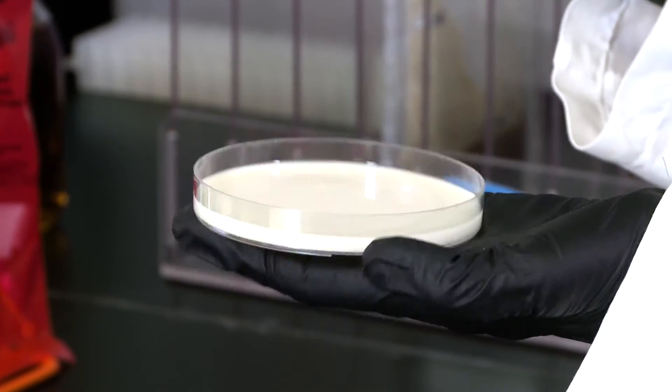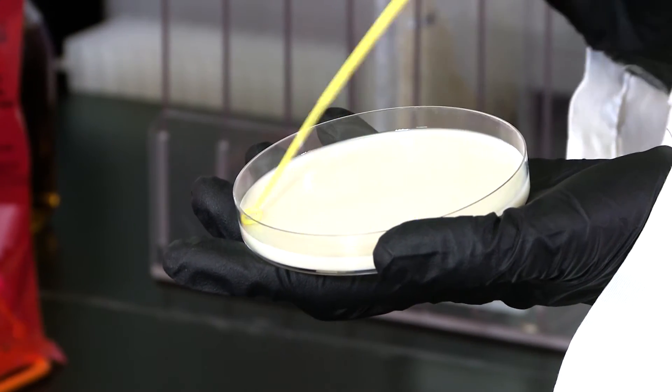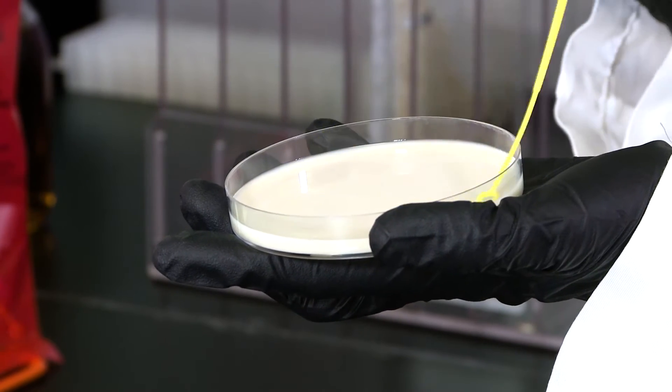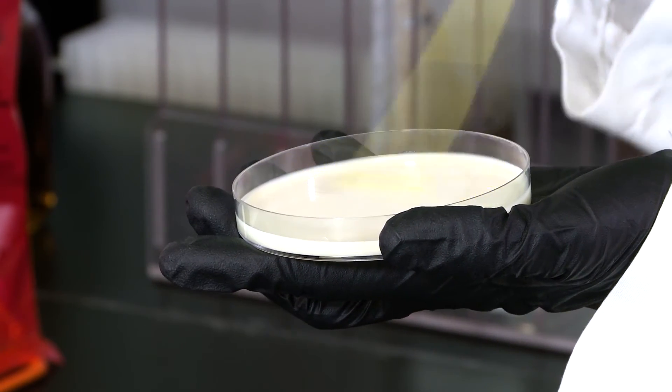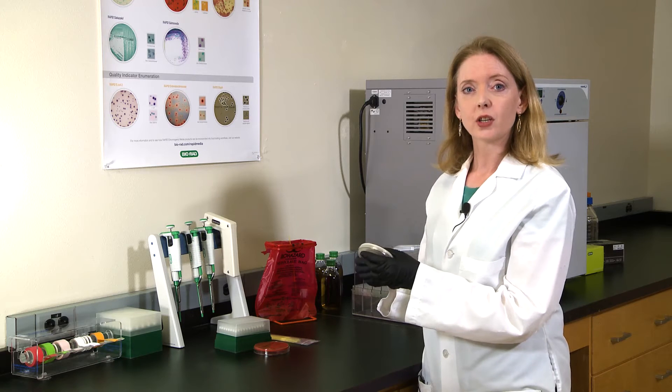Turn the plate one quarter turn and streak across the other half of the agar surface in relatively tight streaks over the whole dish starting from the edge of the previous spread. It is important to obtain well isolated colonies for further confirmation.